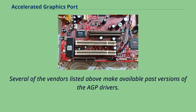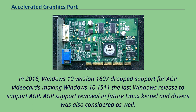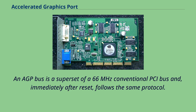Several of the vendors listed above make available past versions of the AGP drivers. In 2016, Windows 10 version 1607 drops support for AGP video cards, making Windows 10 1511 the last Windows release to support AGP. AGP support removal in future Linux kernel and drivers was also considered. An AGP bus is a superset of a 66 MHz conventional PCI bus and, immediately after reset, follows the same protocol.